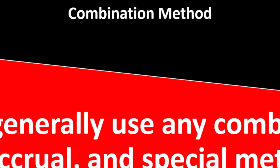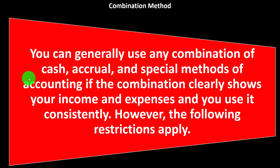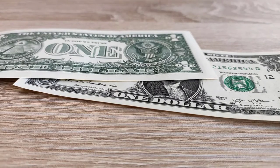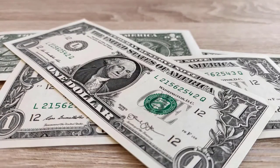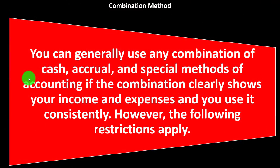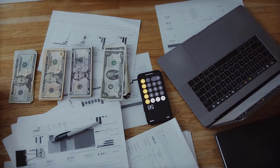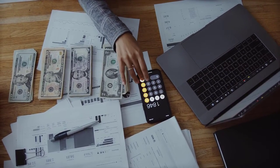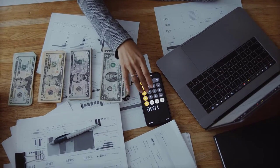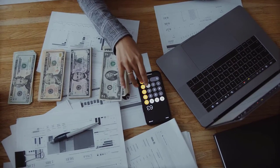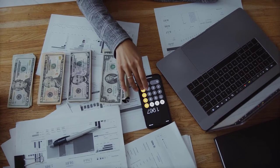Now we're looking at a combination method, talking about accounting methods. We've been going over the cash method and the accrual method in some depth. People are often on more of a hybrid type of method, and in that case you want to make sure to mark that off on the tax return at the very first time you record the Schedule C business on your taxes, because you're going to need consistency after that point. Using a combination method is actually fairly common for small businesses.